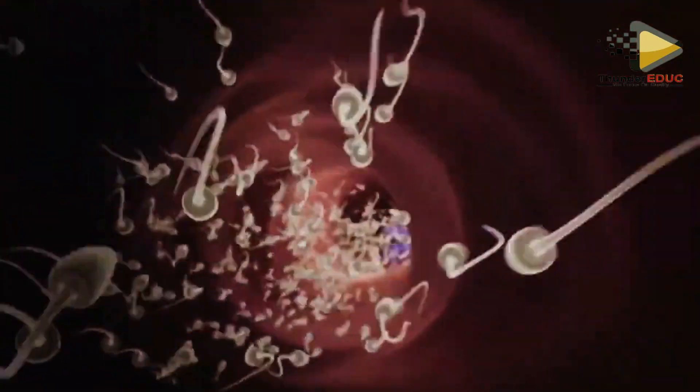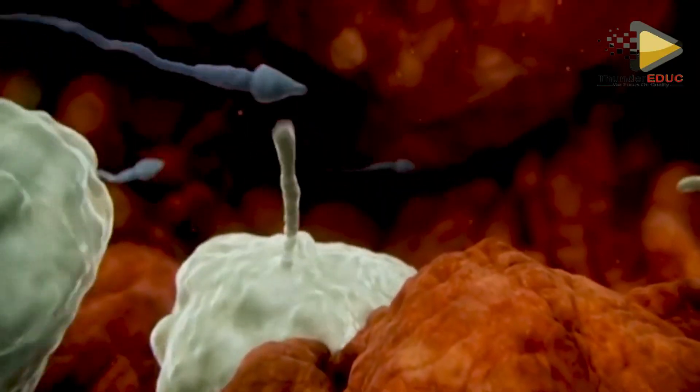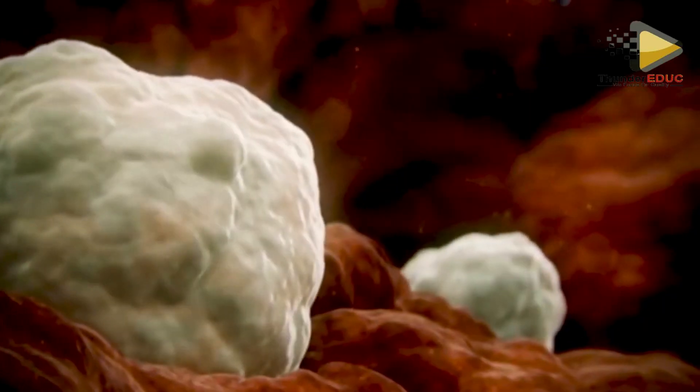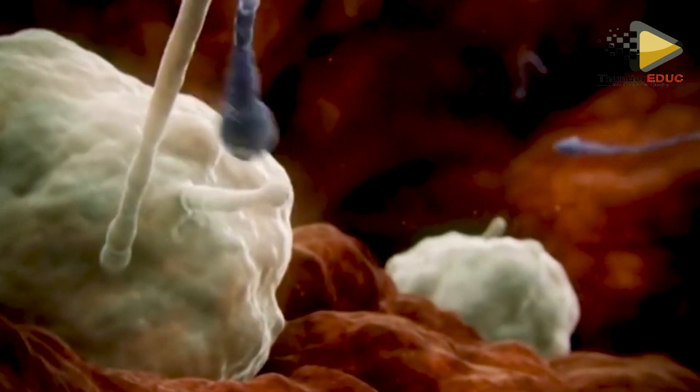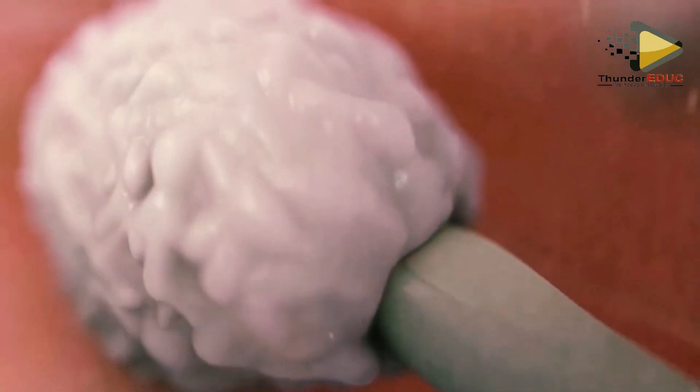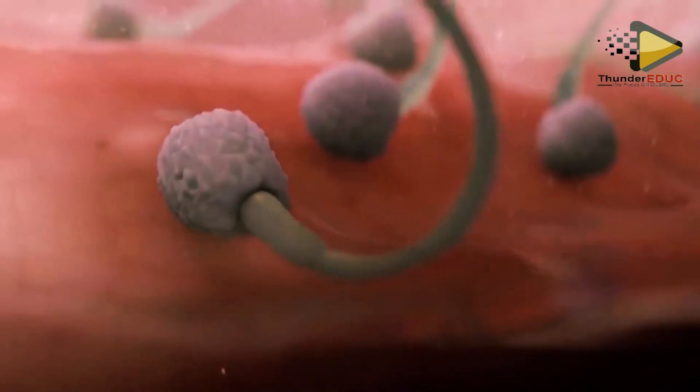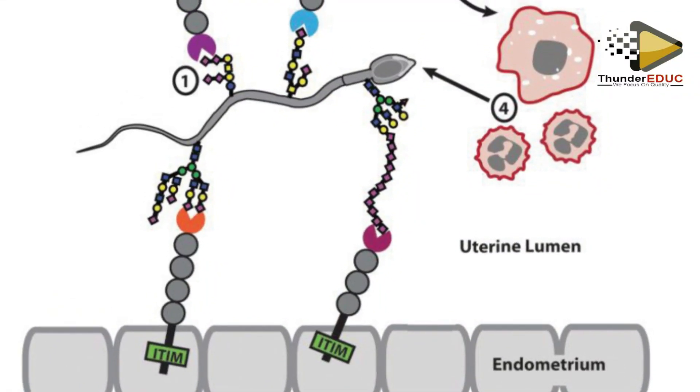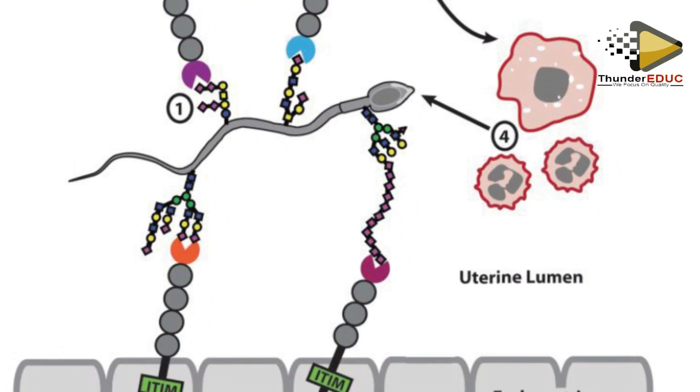Fertilization occurs in the fallopian tube. However, the immune system of the female identifies sperms as foreign particles and kills them.